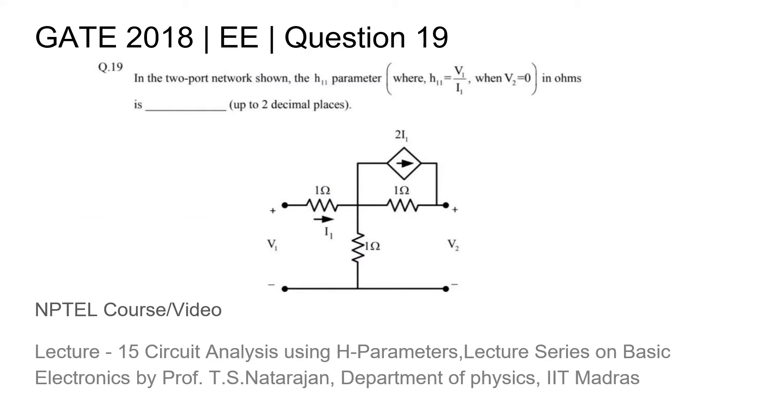This is Question 19 from the GATE 2018 EE paper, where we are given a two-port network and asked to find the h11 parameter - that is, the input impedance when the output voltage is zero, in ohms up to two decimal places.